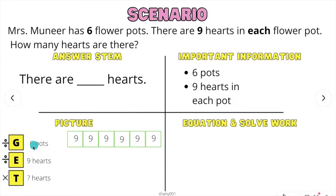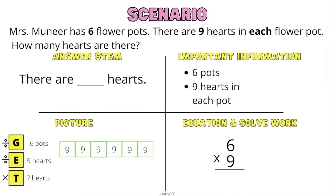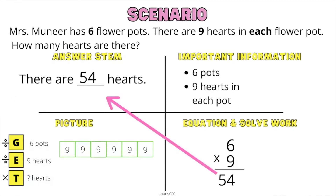If you would like to draw this out, your six flower pots would be six squares — one, two, three, four, five, six. There are nine hearts in each square; you could write the number nine or draw nine circles, hearts, or stars in each of the squares. Our equation is six times nine. We need to multiply to find the total. Six times nine is 54. There are 54 hearts.